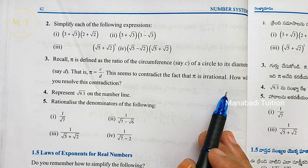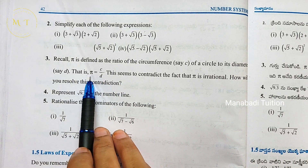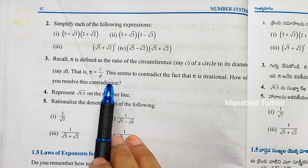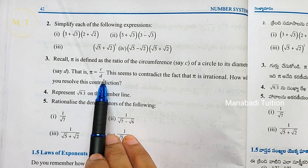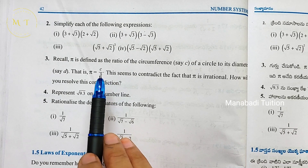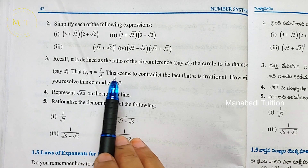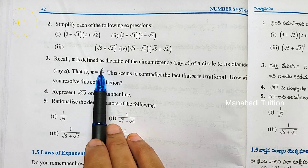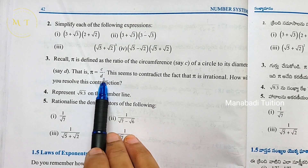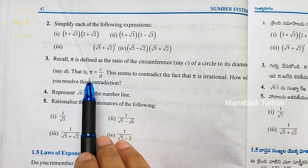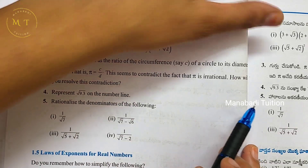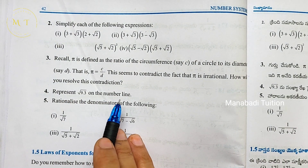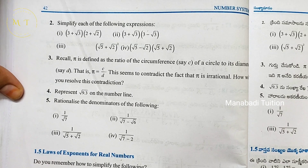Pi value is irrational. So the circle circumference divided by diameter gives C by D, which looks like a rational p by q fraction formula. So how will you resolve this contradiction?